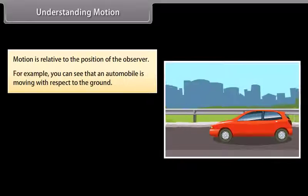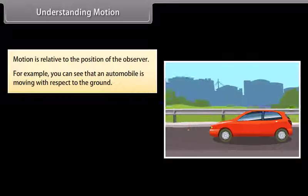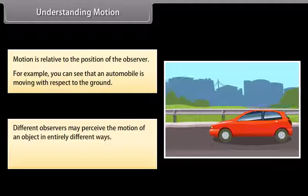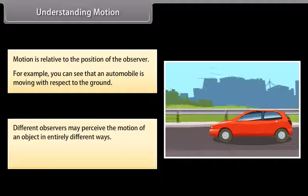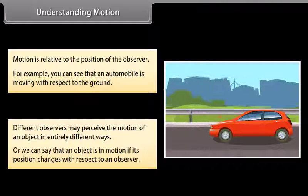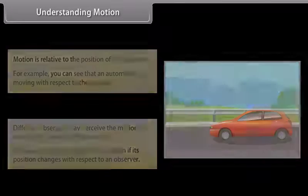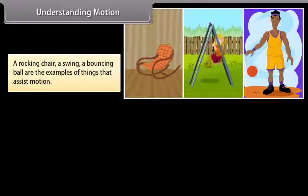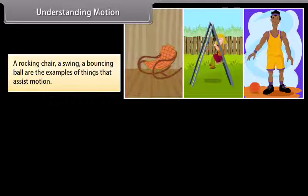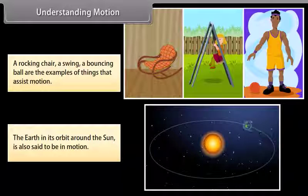Motion is relative to the position of the observer. For example, you can see that an automobile is moving with respect to the ground. Different observers may perceive the motion of an object in entirely different ways. An object is in motion if its position changes with respect to an observer. A rocking chair, a swing, and a bouncing ball are examples of things that exhibit motion. The earth in its orbit around the sun is also said to be in motion.